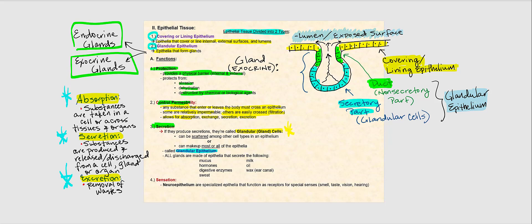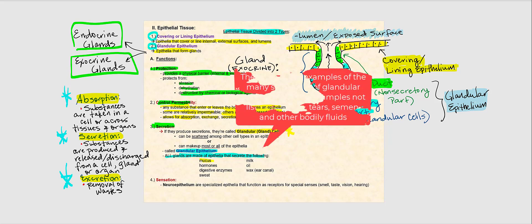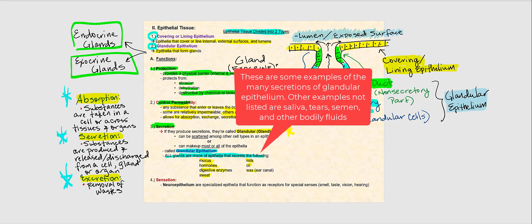All glands are made up of epithelia that secrete or produce or discharge products such as mucus, hormones, digestive enzymes, sweat, milk, oil, and earwax. All of these secretions are produced by glandular epithelium.